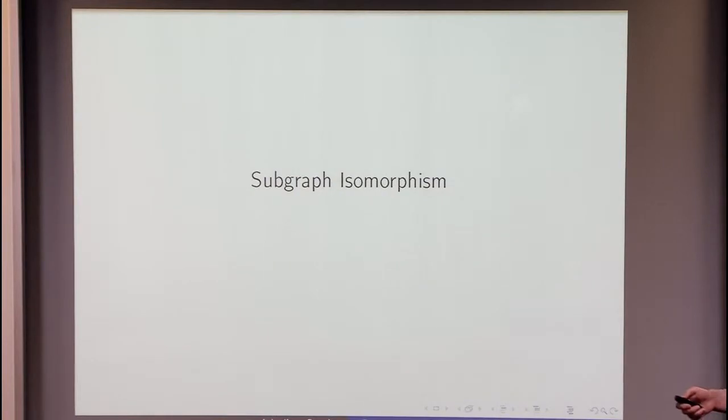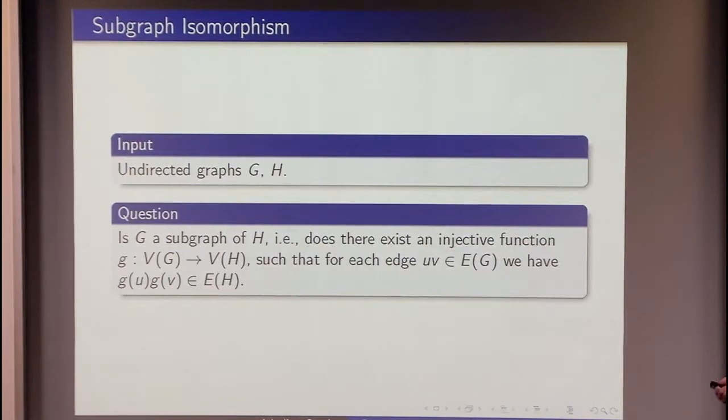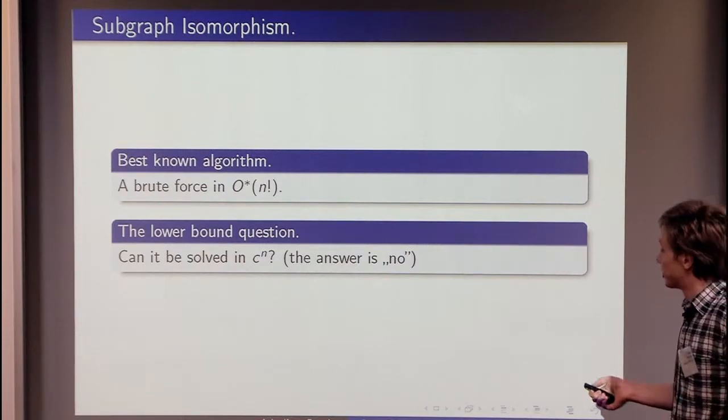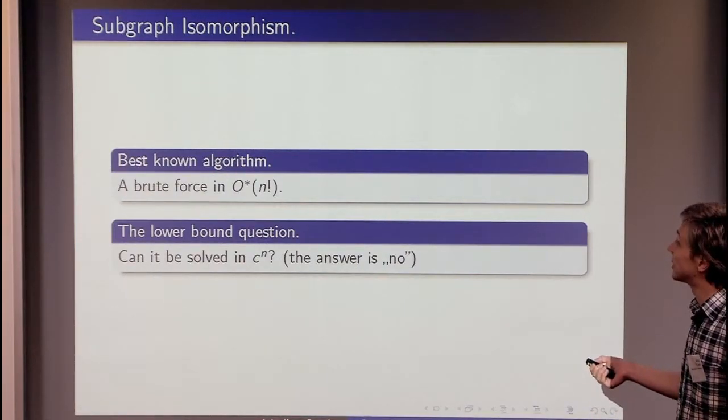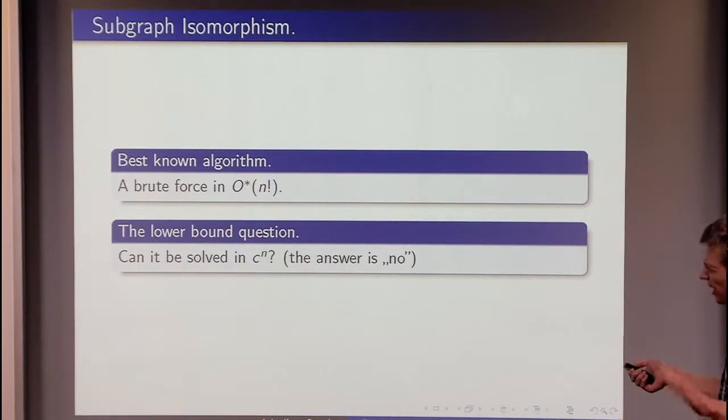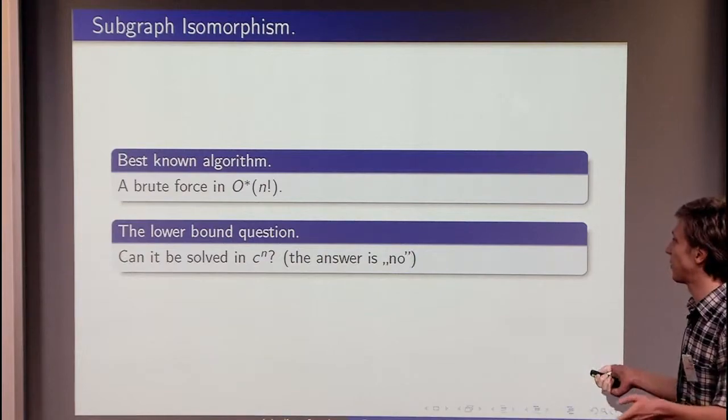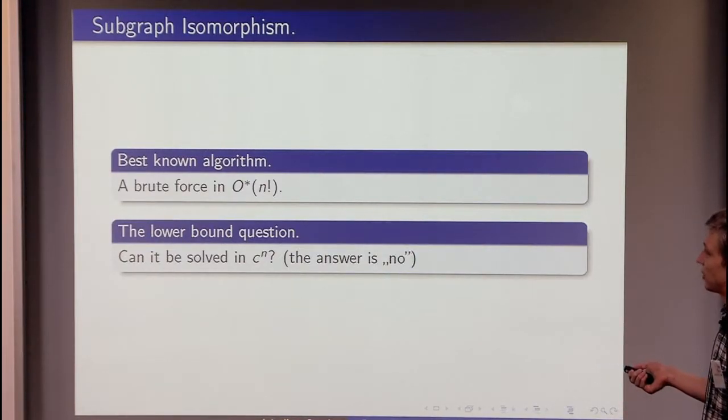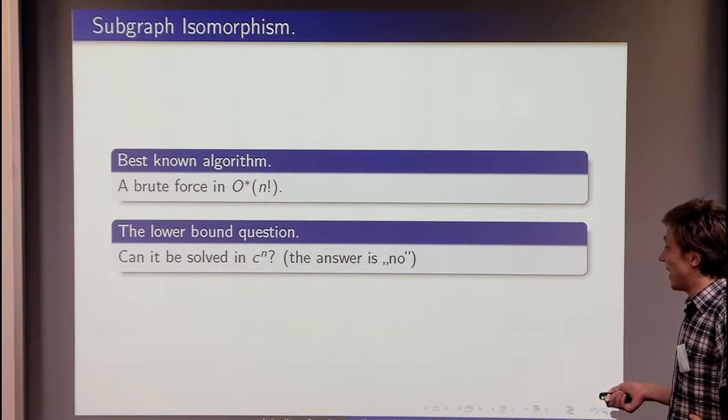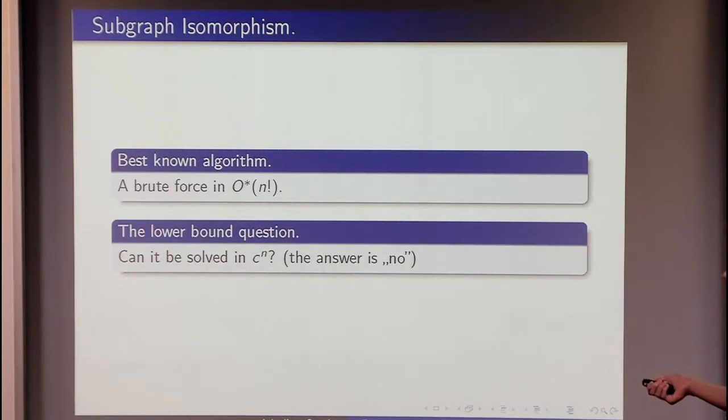Now we can move with this technique to subgraph isomorphism. Subgraph isomorphism is a problem where we are asking whether graph G is a subgraph of graph H. What can be our most basic approach to tackle such a problem? The best-known algorithm is a brute force. Let us assume for the simplicity that both graphs have n vertices.